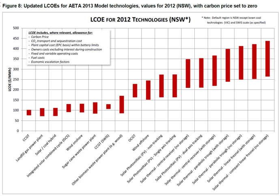Intermittent power sources, such as wind and solar, may incur extra costs associated with needing to have storage or backup generation available. At the same time, intermittent sources can be competitive if they are available to produce when demand and prices are highest, such as solar during summertime midday peaks seen in hot countries where air conditioning is a major consumer.